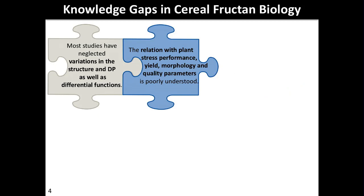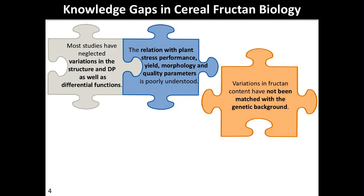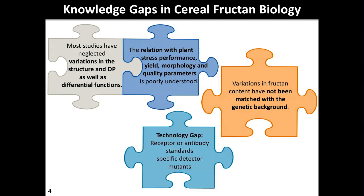However, there is a knowledge gap. Most studies have neglected the variation in structure and degree of polymerization, as well as differential functions of the different structures. Related to this, the relation of fructan amount and profile with plant stress performance, yield, morphology, and quality parameters is very poorly understood. Additionally, variations in fructan content have not been matched with the genetic background. There is also a technology gap because specific receptors, antibodies, and standards are missing. We don't have a specific detector yet, and the number of available mutants is below five.